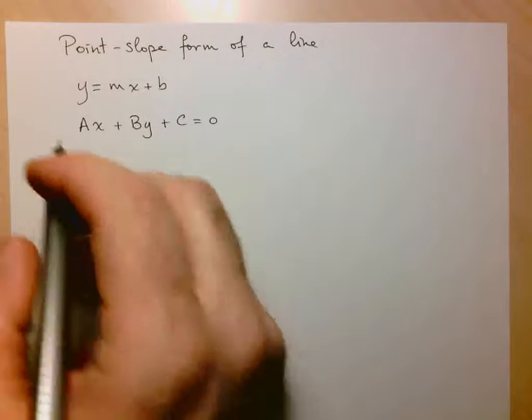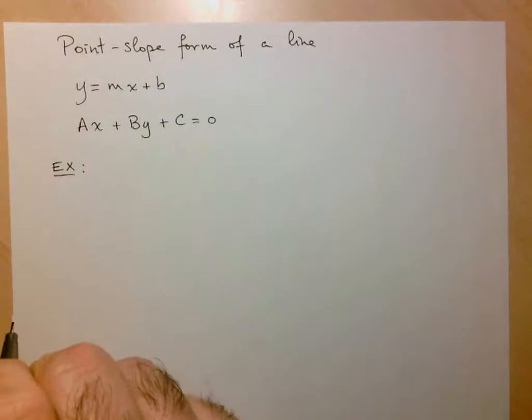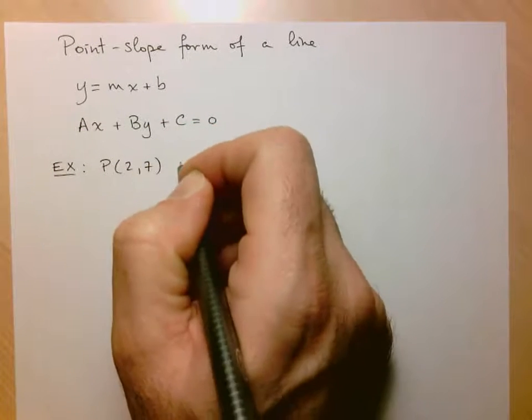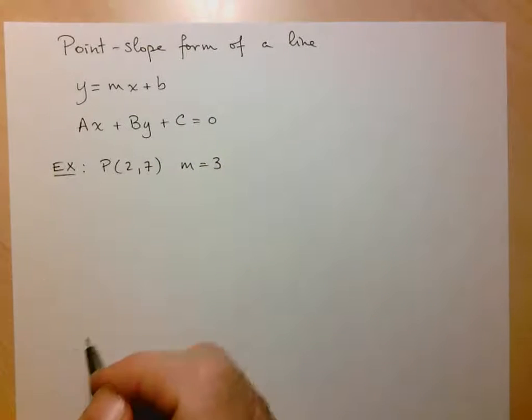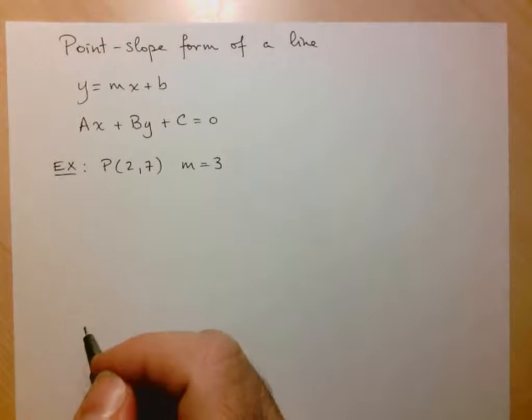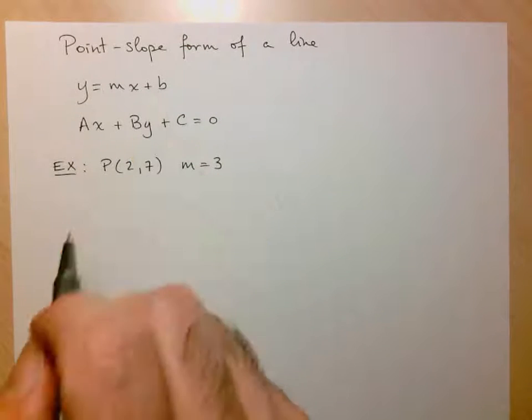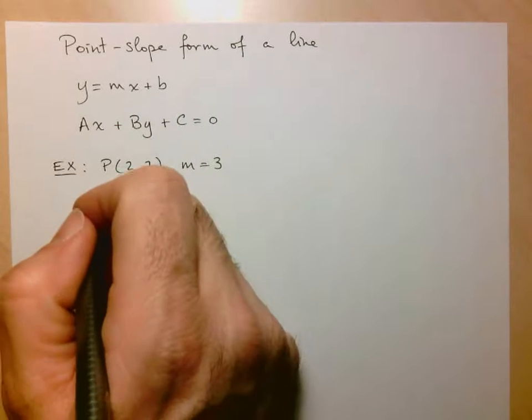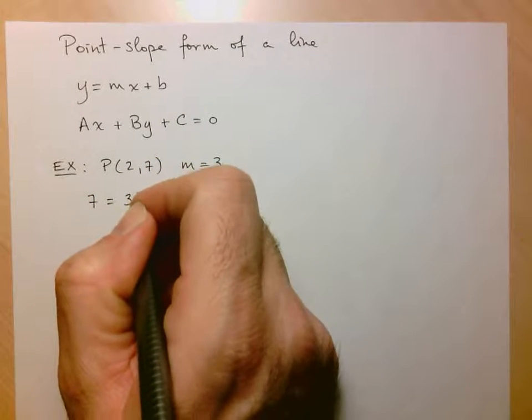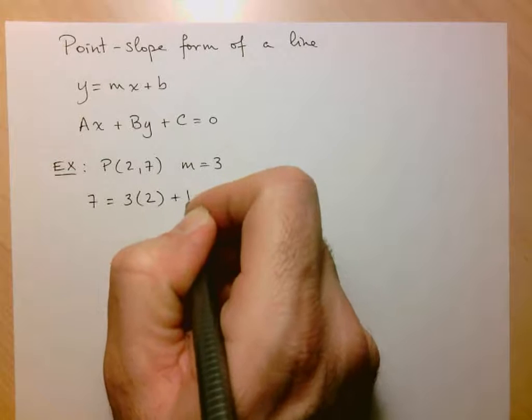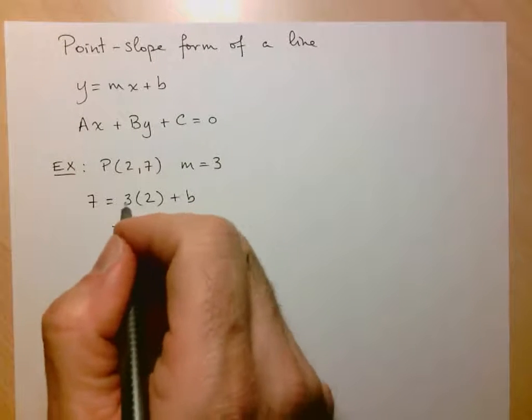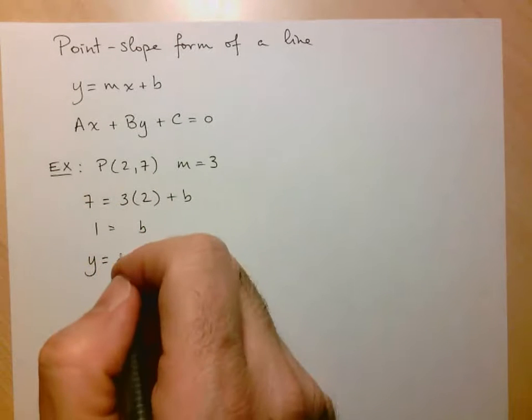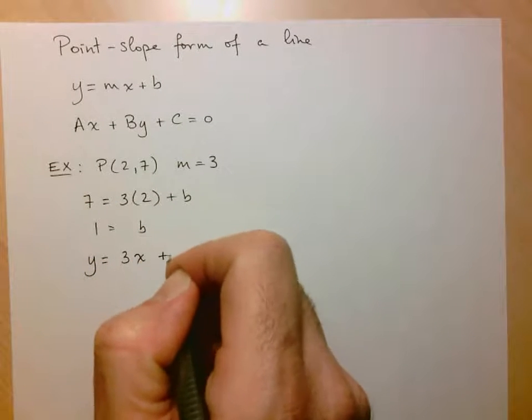So let's take a look at a particular example. Let's say I have a line that contains the point (2,7) and has a slope of 3. So what you probably would have done in the past is you would have taken this information and input it into the slope-intercept form. So here we've got y equals 7, slope equals 3, x equals 2, and then plus b, and then solve for b. So 7 minus 6 is 1. So your equation is y=3x+1.